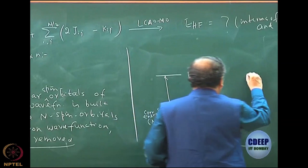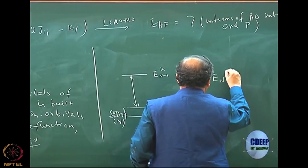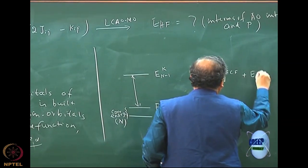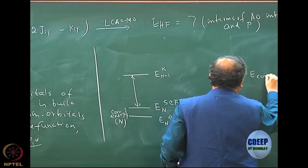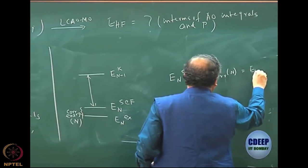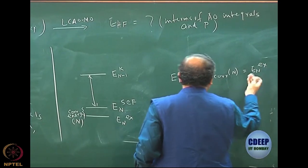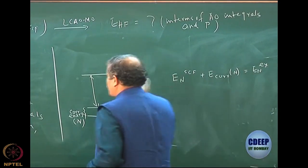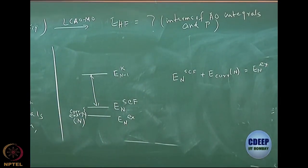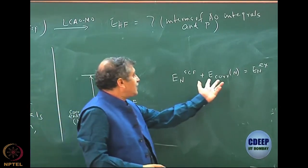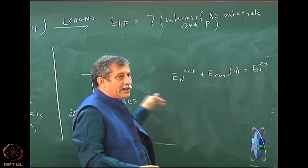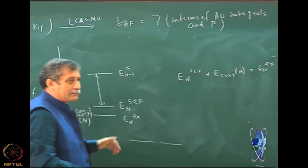Whatever we are doing will be greater than the exact energy; if you do full CI and all that, that will be the actual exact energy. This is called the correlation energy of the N electron problem, E_corr(N). So you can say that E_N SCF plus E_corr(N) gives me E_N exact. In this definition, the correlation energy is negative because it pushes the energy down.